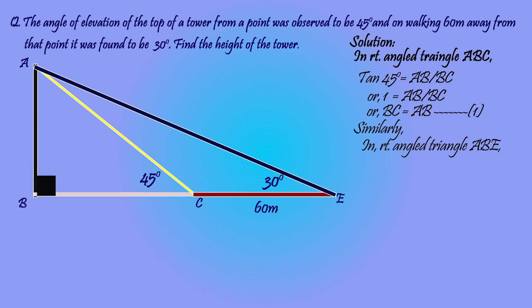Similarly, in right angled triangle ABE, tan 30 degrees equals AB by BE. As the value of tan 30 is 1 divided by root 3, or instead of tan 30 we can write 1 divided by root 3 equals AB by BE. Instead of BE we write BC plus CE, as BE is the sum of sides BC and CE.